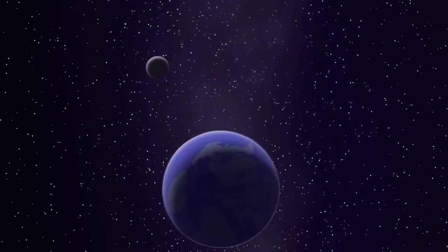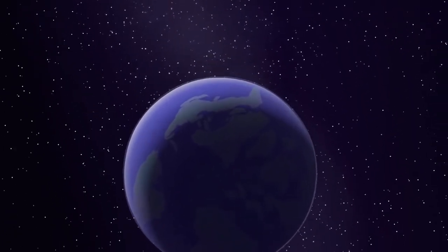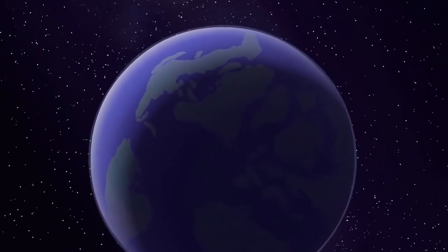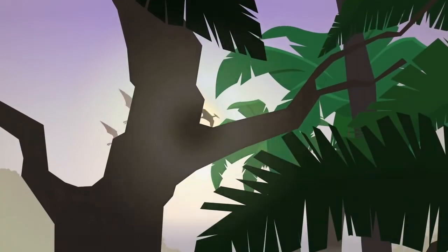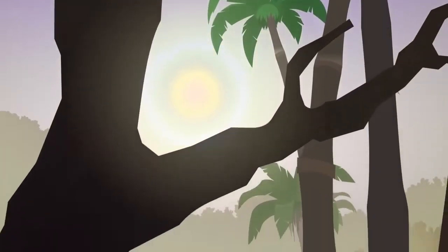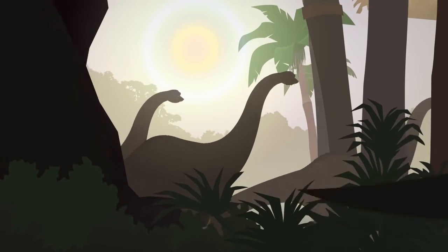This is the Earth, as it looked 90 million years ago. Geologists call this period the late Cretaceous. It was a time of extreme global warming, when dinosaurs still ruled the planet.